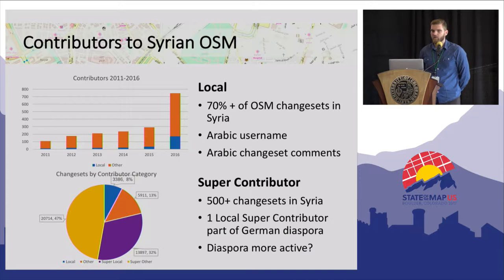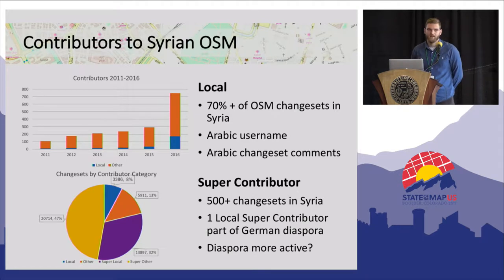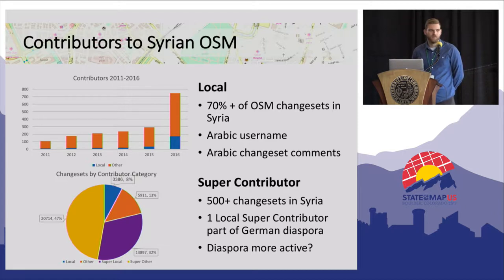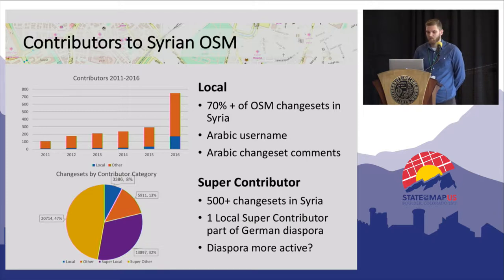The one local super contributor, according to an online profile we found, is a member of the Syrian diaspora now in Germany. We also identified nine more local contributors that added 100 or more change sets over Syria, and four of those nine tagged 15 or more features in German. Considering how hard it is for someone in Syria to regularly contribute to the map, it's not a stretch to say that diaspora members are probably more regular contributors than those still in affected areas.